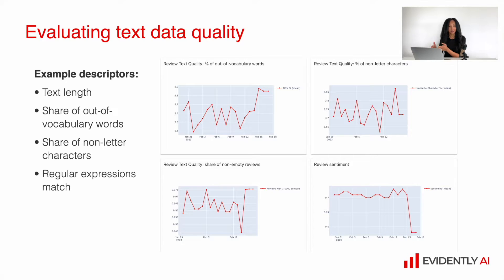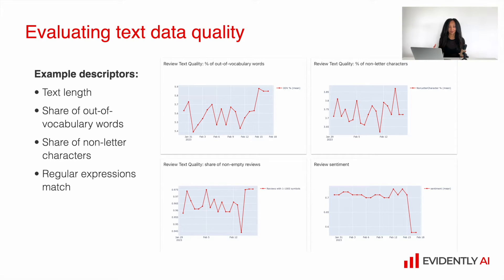So that's structured data, a numerical feature, and that's very nice. Together with such a straightforward descriptor as text length, you can build quite a lot of meaningful things — for example, share of out-of-vocabulary words in your text, or share of non-letter characters, etc.